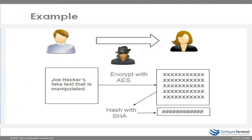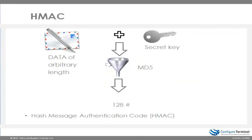However, what stops JoeHacker from receiving the data, changing it — manipulating the data before it reaches Sarah — encrypting it with AES, hashing that fake data with SHA, and appending a new hash to the data, then transmitting it to Sarah? Sarah has no way of knowing that the data has been manipulated, because when she hashes this new data, her hash will be the same as JoeHacker's hash. To combat that, what Peter needs to do is use something called hash message authentication code, or HMAC. There are two variants: HMAC-MD5 and HMAC-SHA.